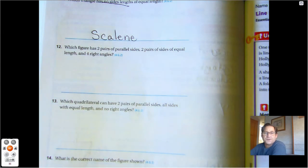Which figure has two pairs of parallel sides, two pairs of sides of equal length, and four right angles? So that would be a rectangle.